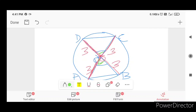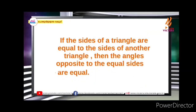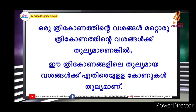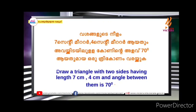We have to prove this angle using two sides. We can show this angle is equal to one angle. If the sides of one triangle are equal to the sides of another triangle, then the angles opposite to the equal sides are equal. We need to do this angle with the same angle. This angle is equal to the 70-degree angle by the vertical angle.